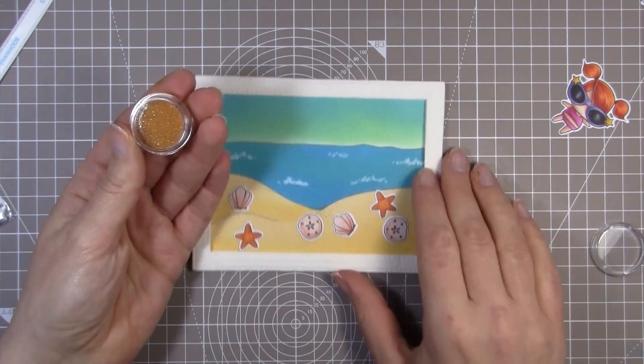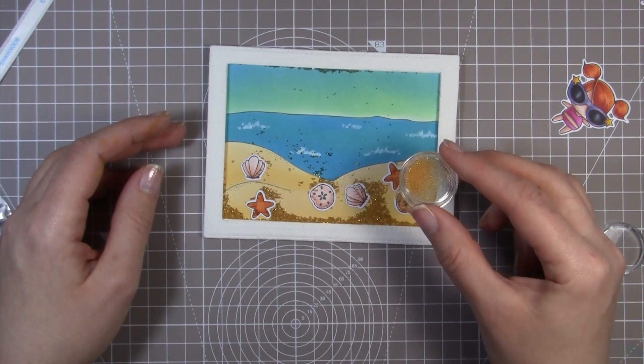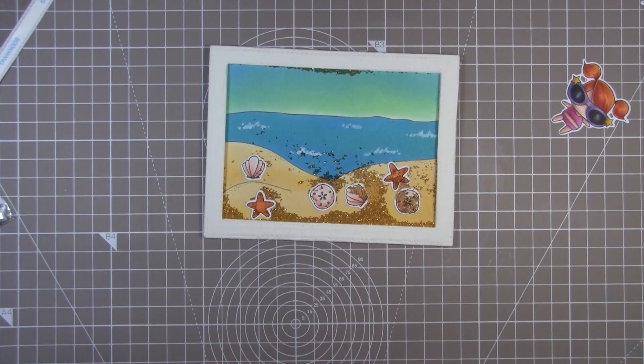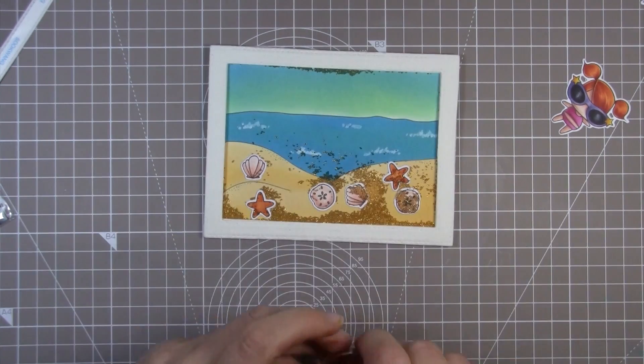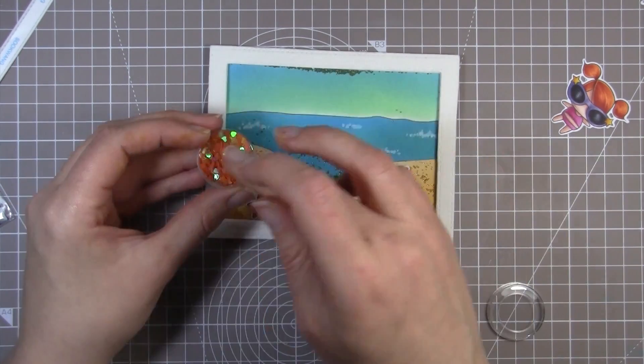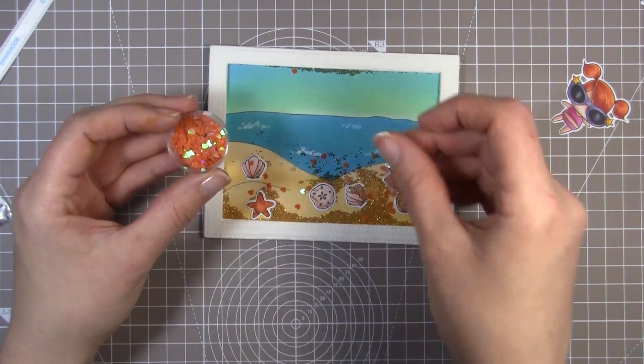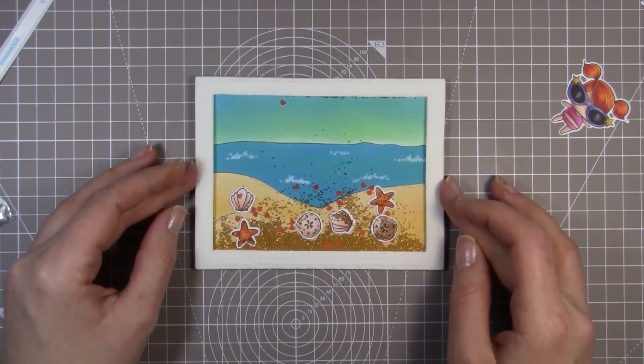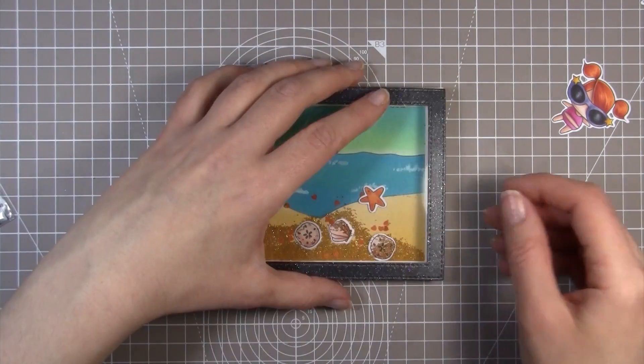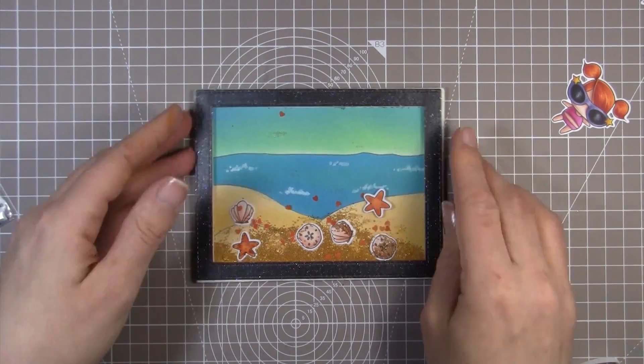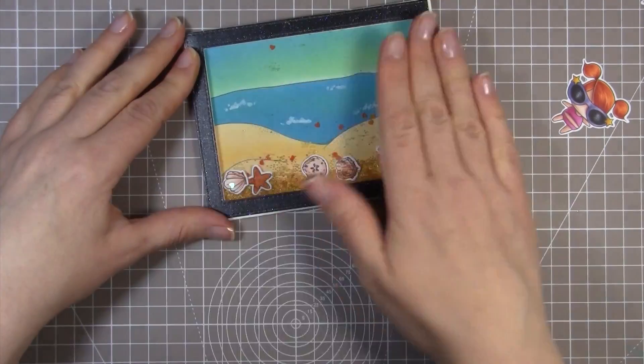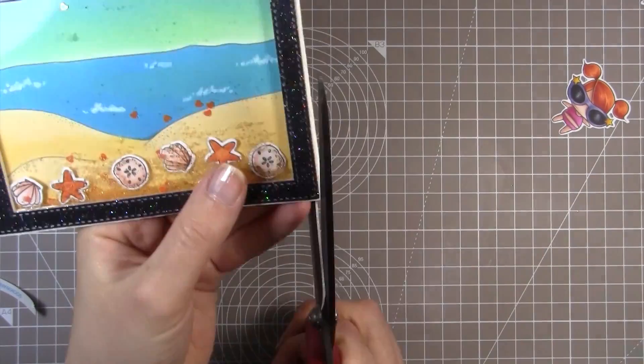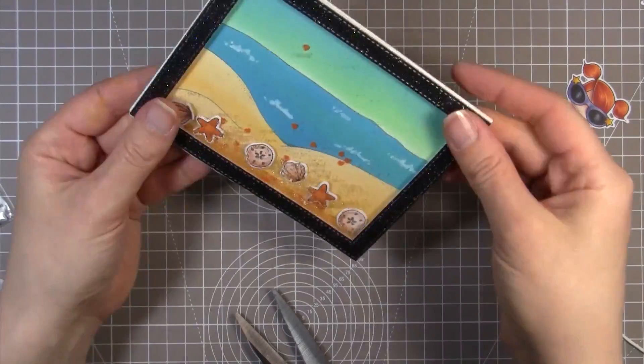I just grabbed some microbeads and some tiny little heart shaped sequins that I had in my stash. Because I don't use embellishments that often, I've got quite a huge stash that I've had for quite a number of years, which I'm sure many of you can probably identify with. So I found something in my stash and popped it in the shaker part and also popped those die cut shell images in there as well.